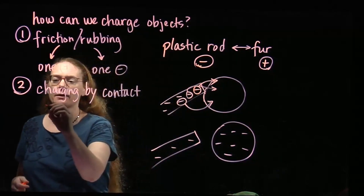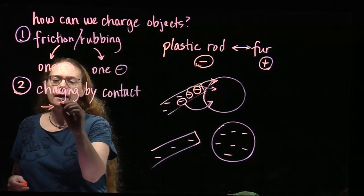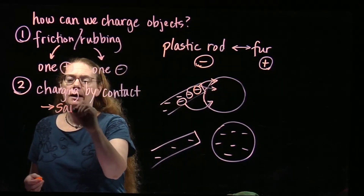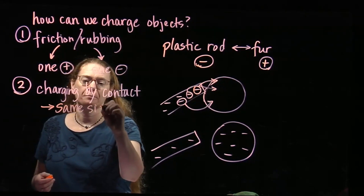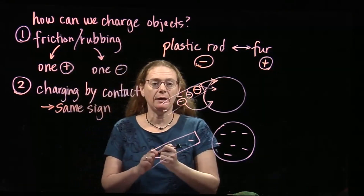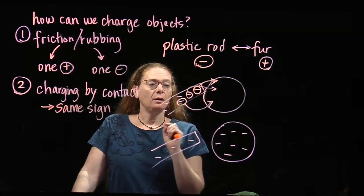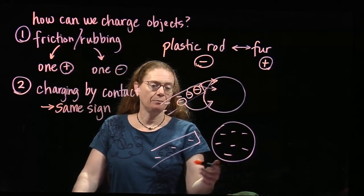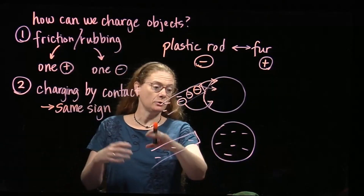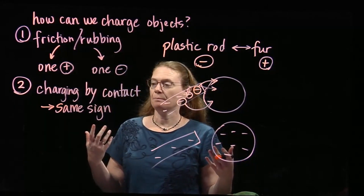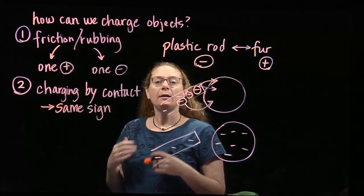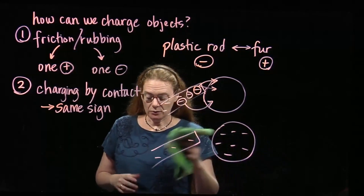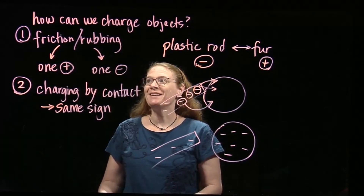When we have charging by contact, that gives an object the same sign as whatever it was charged with. So if I have a negative rod and touch it to the ball, the ball becomes negative. If I had a positive rod and touched it to the ball, the ball would become positive. Charging by contact means the object is given the same sign.